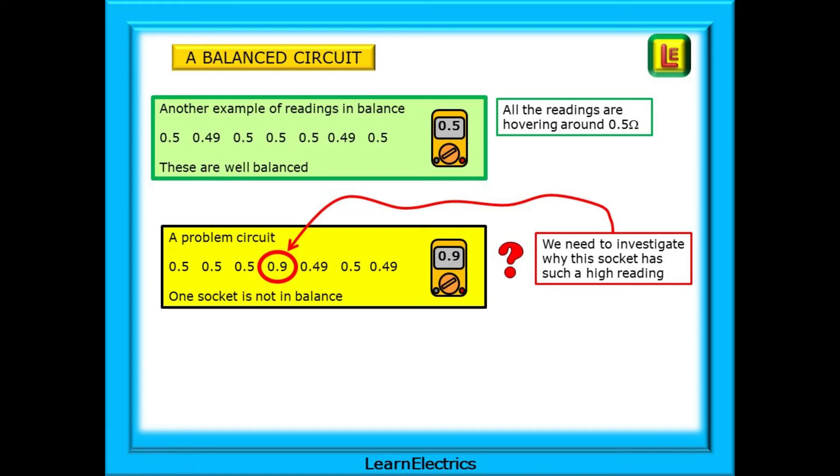But the yellow box shows a circuit with problems. One of the readings is quite clearly out of balance with the others. At 0.9 ohms, when all the others are about 0.5 ohms, something is wrong with the cabling to that socket or the socket itself, and we need to investigate and resolve the problem before moving on.